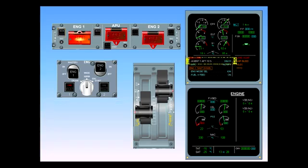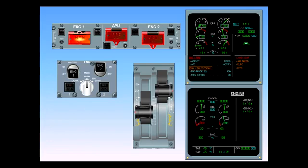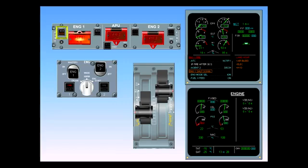Simultaneously, an automatic countdown is started on the ECAM. This is to allow the engine to further slow down in order to increase the effectiveness of the agent. The next line of the ECAM procedure calls for the discharge of the fire extinguisher bottle. Go ahead and perform the ECAM action. The discharge light illuminates on the agent one push button. This means that the fire extinguisher bottle is depressurized.